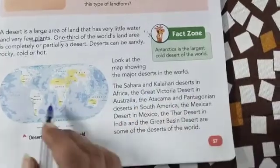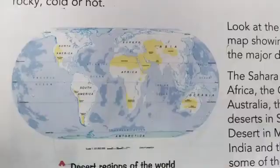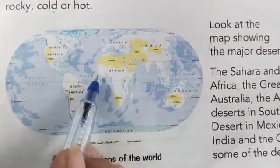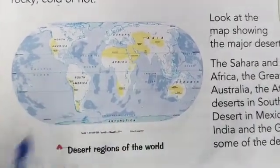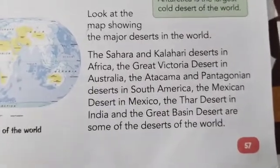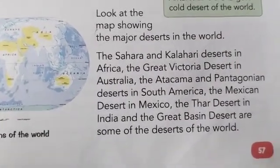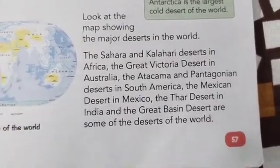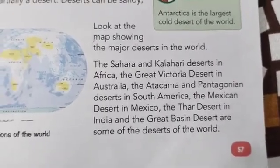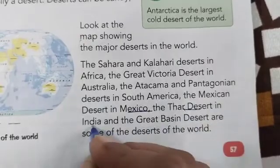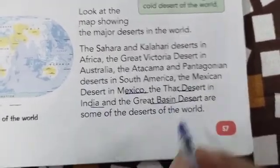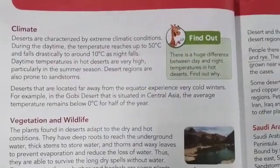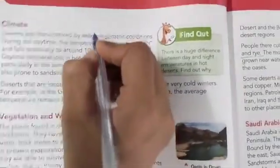Look at the map showing the major deserts in the world. The areas in yellow shade are the desert areas. Sahara and Kalahari deserts are in Africa, Great Victoria desert in Australia, Atacama and Patagonian deserts in South America, Mexican desert in Mexico, Thar desert in India, and Great Basin desert are some of the deserts of the world.